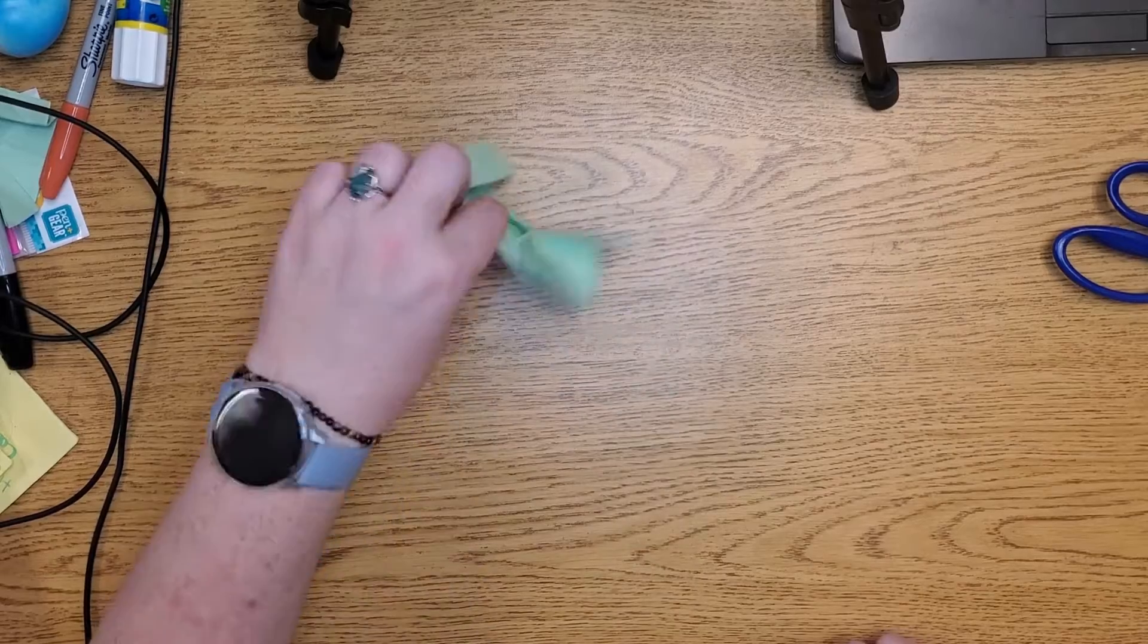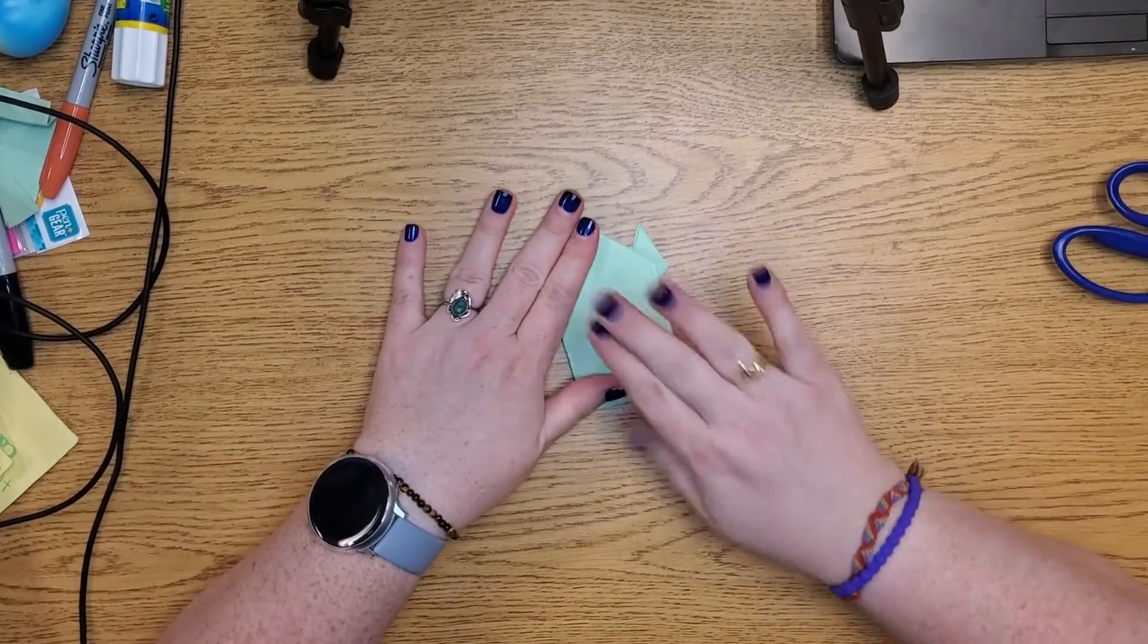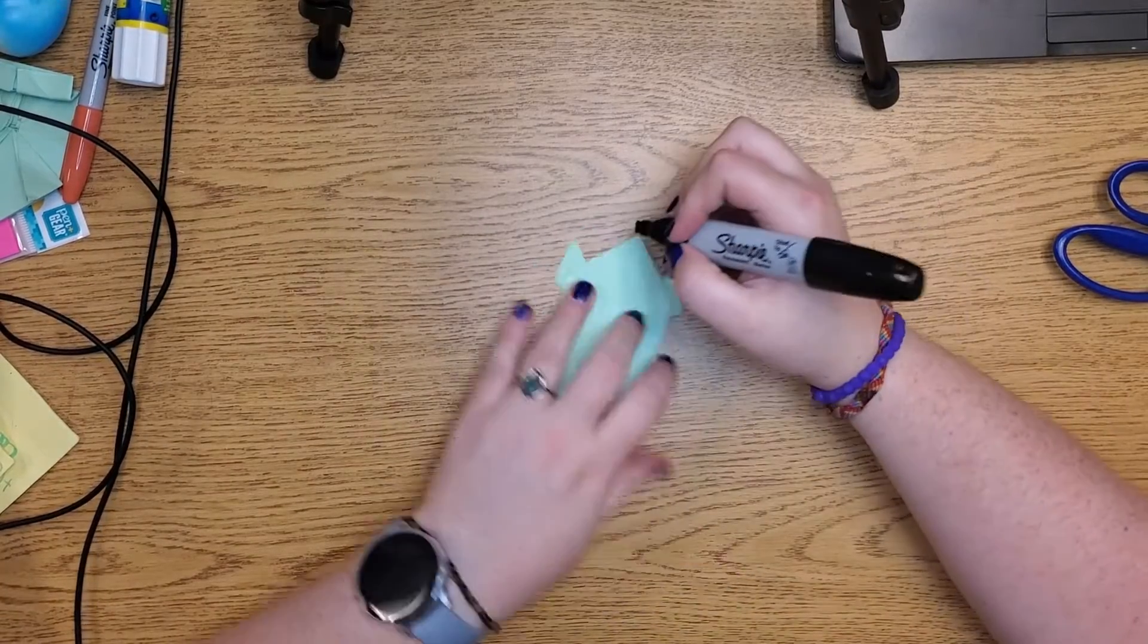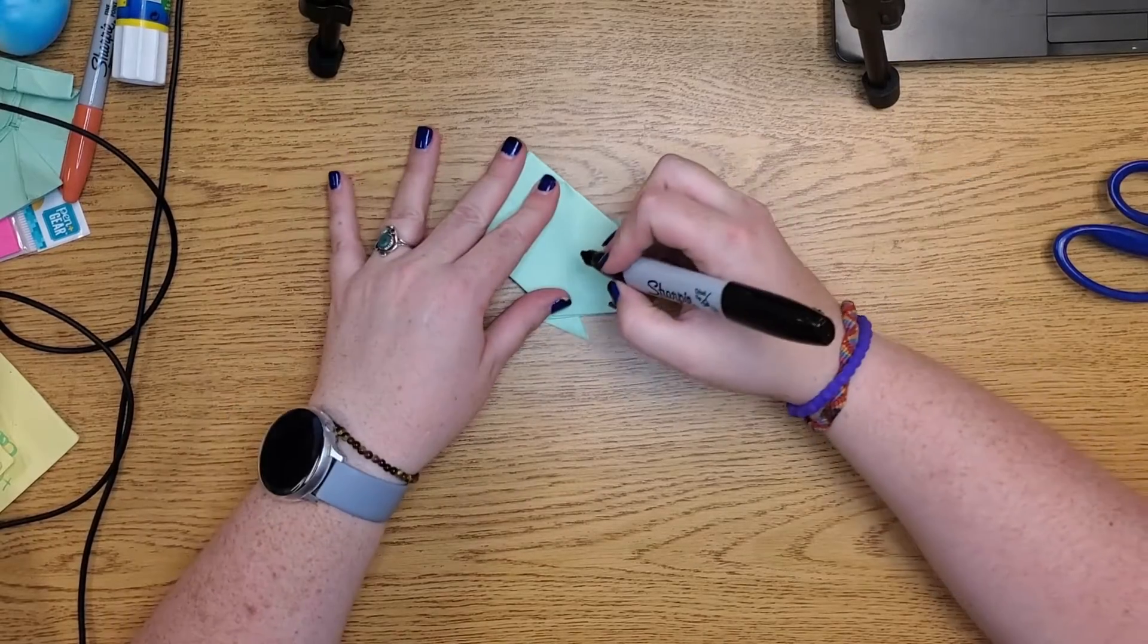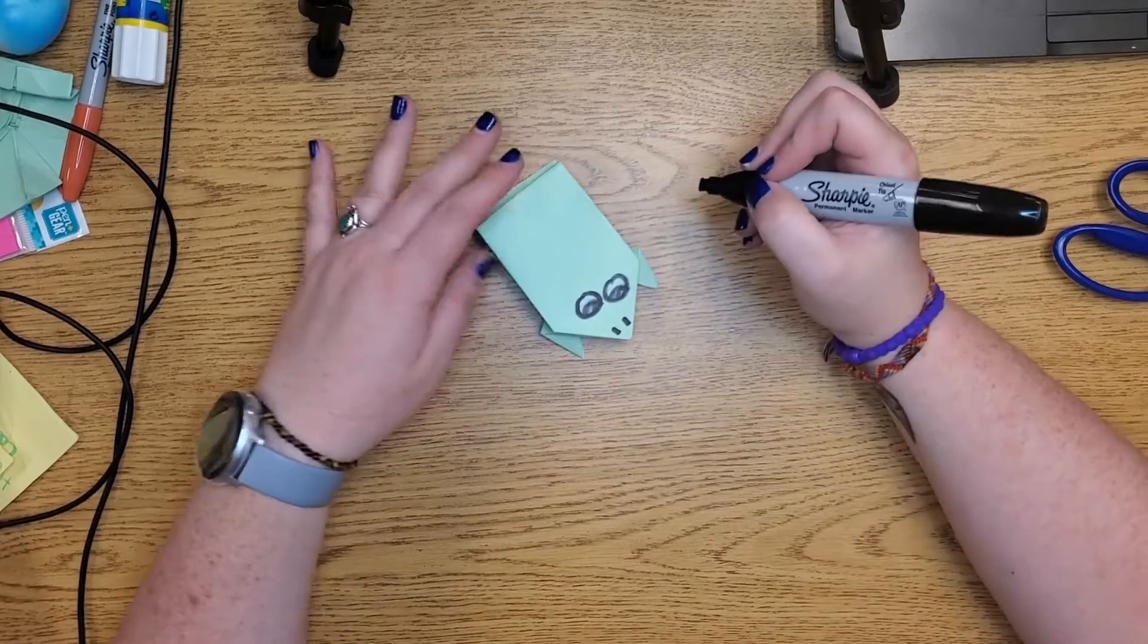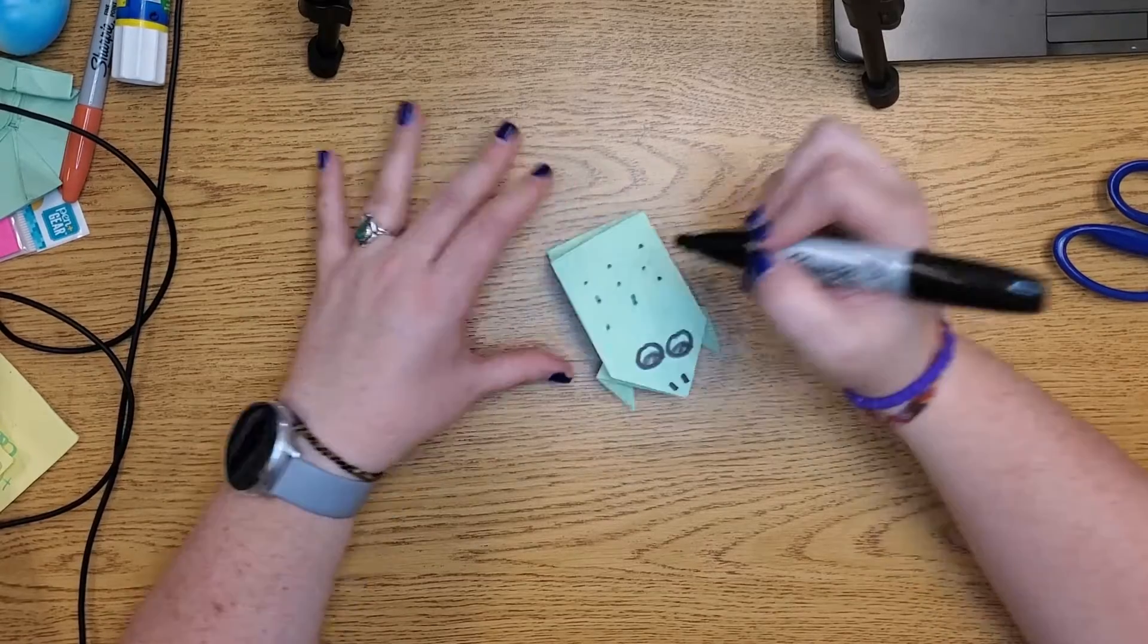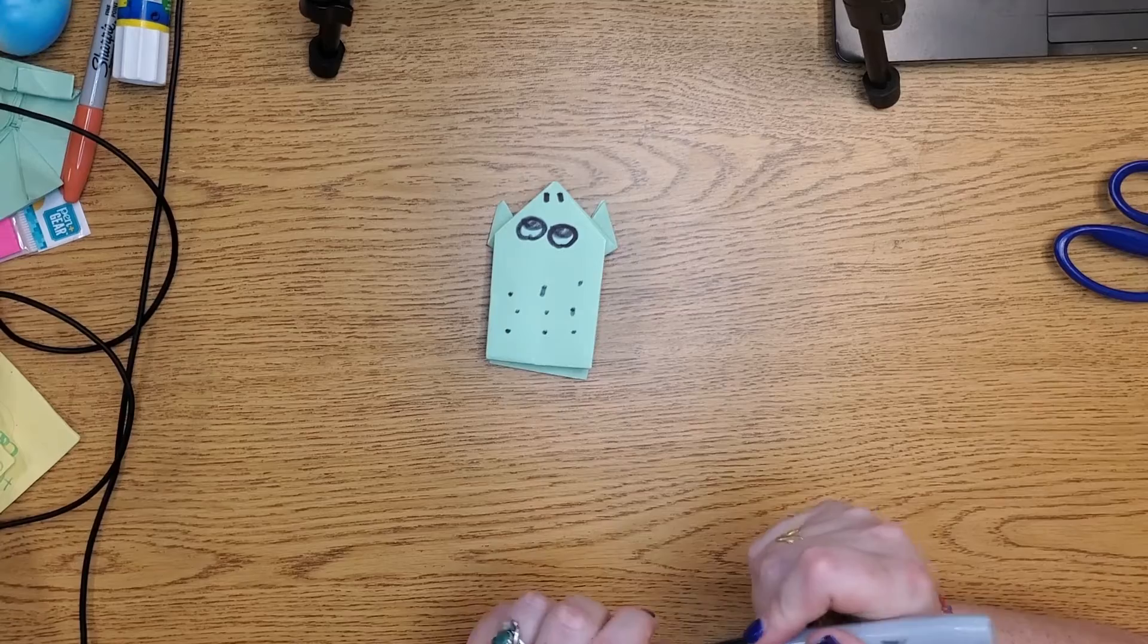So that's a little froggy friend that we made today. I hope you enjoyed that. The last step that you have is decorating your frog. So this is his face right here, so I make the two little lines for the nose, I make big bulgy eyes because that's what I like my frogs to look like, and then sometimes I even put little speckles on them because I like speckle frogs.